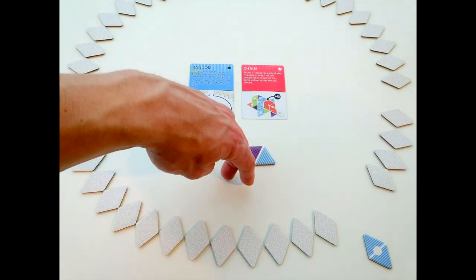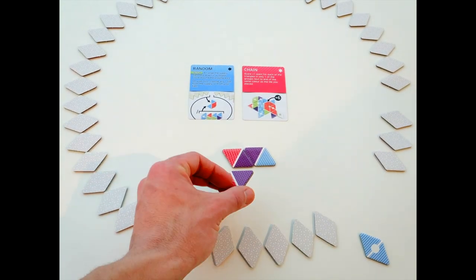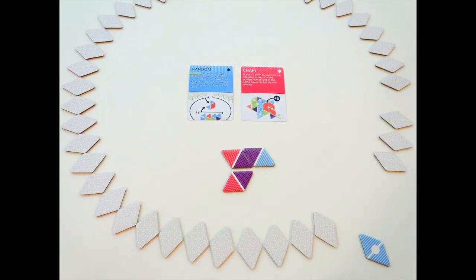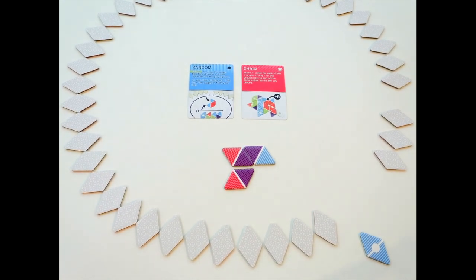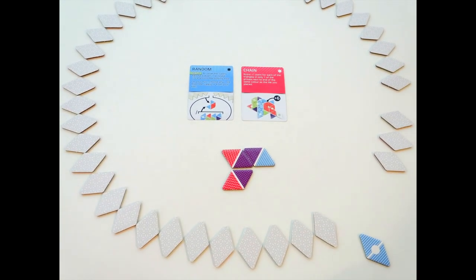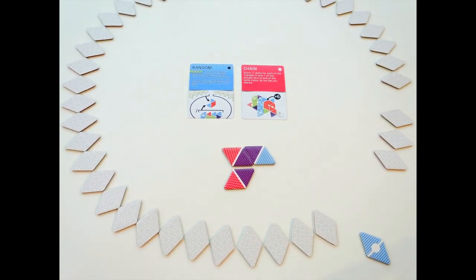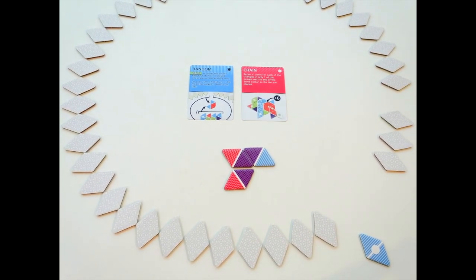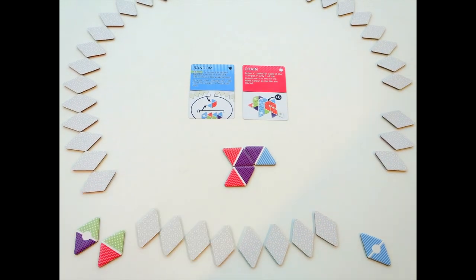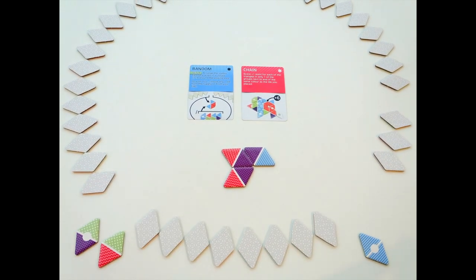The second player takes a tile. It also has a purple triangle. They place it next to two purple triangles already in the playing area. Therefore they score two points. They then take any two tiles from the supply and place them in front of them face up. And that is the end of their turn.